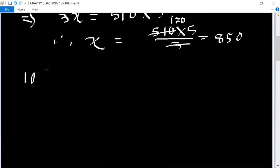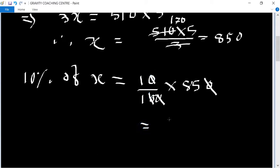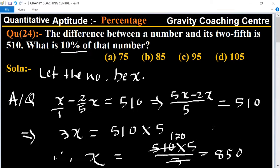Now zeros cancel, leaving only 85. So 85 is the required answer. Option B is the right answer.